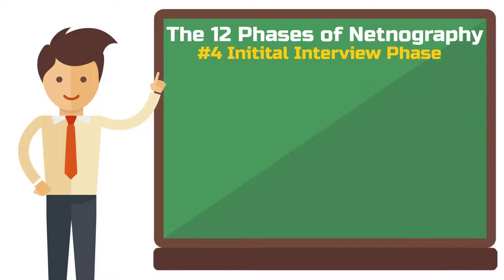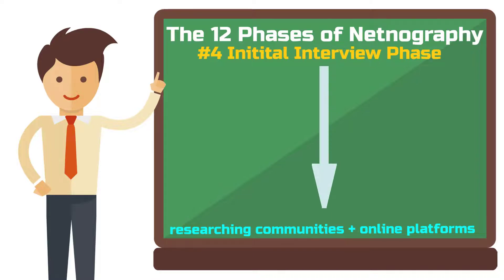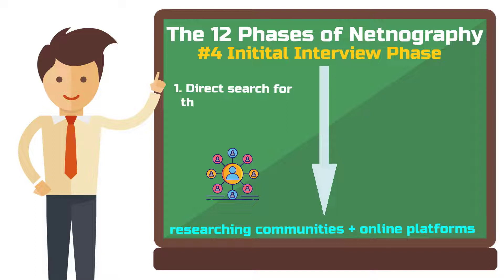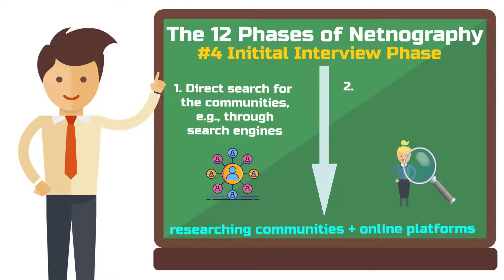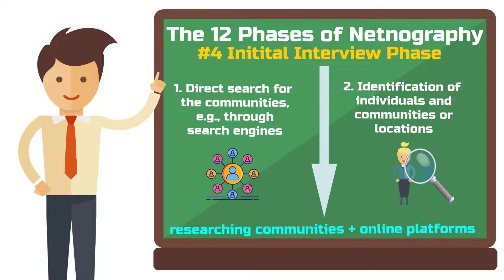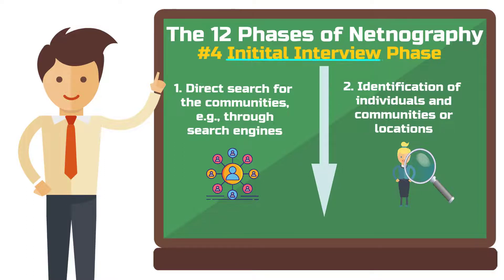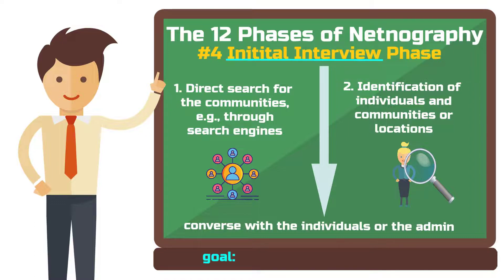Phase 4: The initial interview phase. In this phase, you begin researching communities and online platforms. You have two options: first, directly search for communities through search engines; or second, initially identify the individuals that can inform your research and then determine in which communities they engage. For both approaches, Kotzinets recommends initial interviews — you converse with individuals or the admin of a community to better understand what's going on. By the end of this phase, you should have a list of potential communities suitable for your netnography. The interviews with community members can be repurposed later.